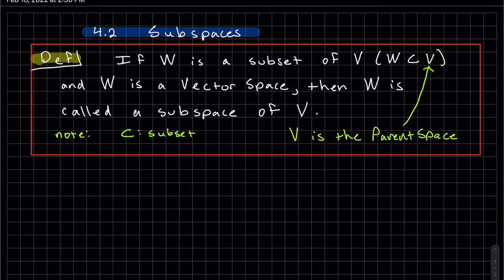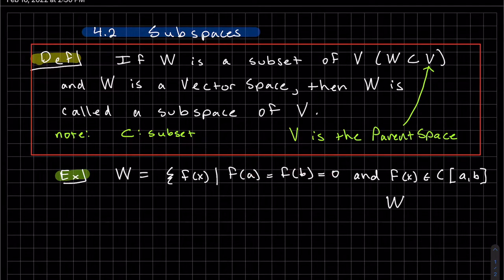We went over a list of parent spaces in the last video. Here's an example. Our parent space is the continuous functions from A to B on the interval A to B. W is a subset of the continuous functions with the property that the endpoints are equal to 0 when you plug it into the function. If both endpoints are 0, then you're in the set W. W is a subset of the parent space continuous functions from A to B.